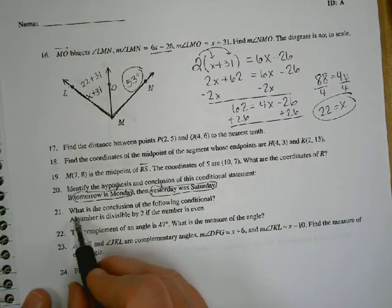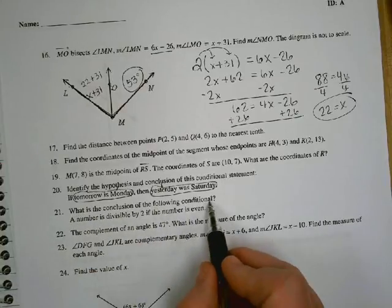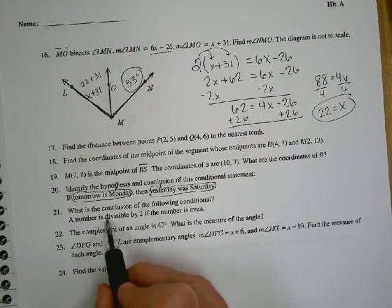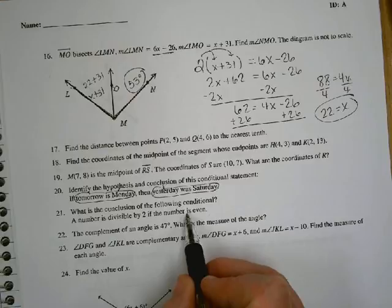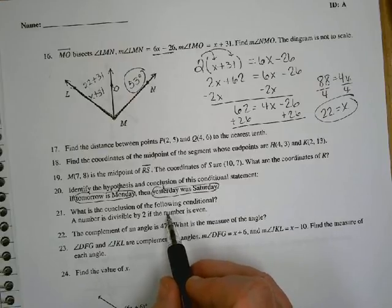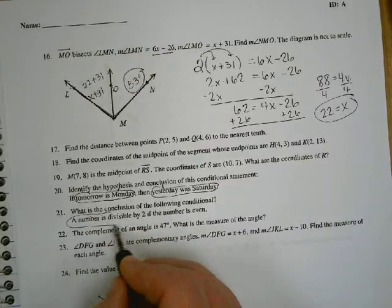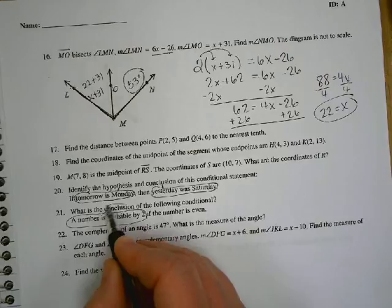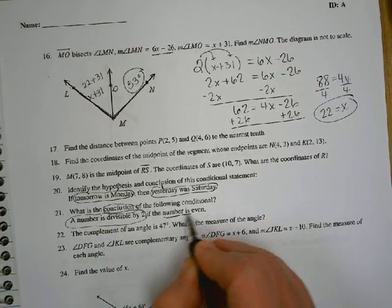21. What is the conclusion of the following conditional? A number is divisible by 2 if the number is even. Where does your hypothesis come? Not always at the beginning, but your hypothesis is always after the word if. So the conclusion in this one is a number is divisible by 2. That is your conclusion because this is your hypothesis because it follows the if.